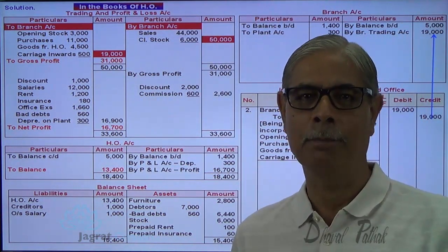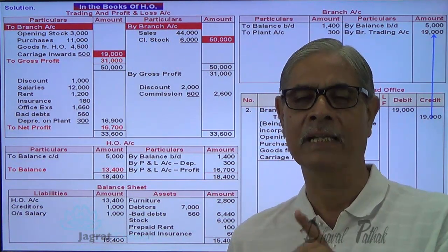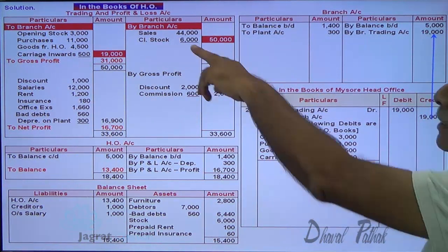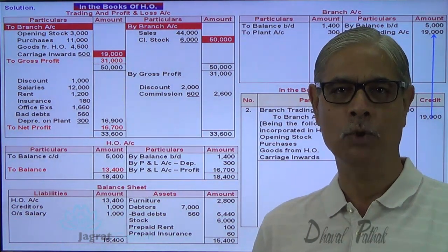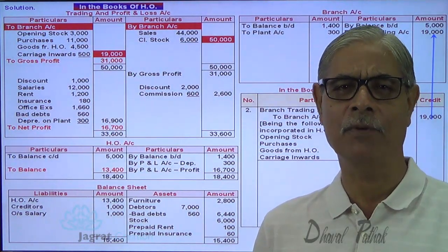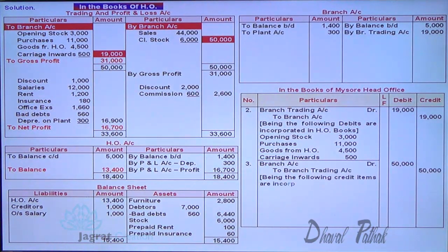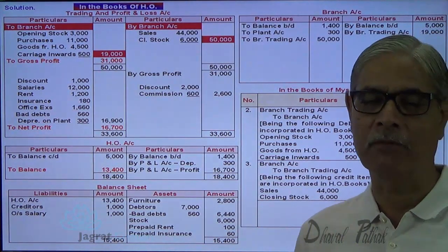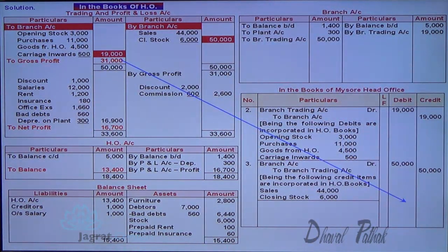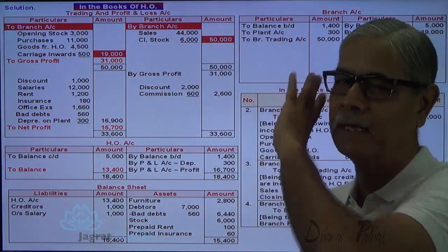The gross profit of 31,000 is then transferred from the branch trading account to the branch profit and loss account: Branch Trading Account debit, to Branch Profit and Loss Account credit 31,000. These three entries complete the absorption of the trading account.